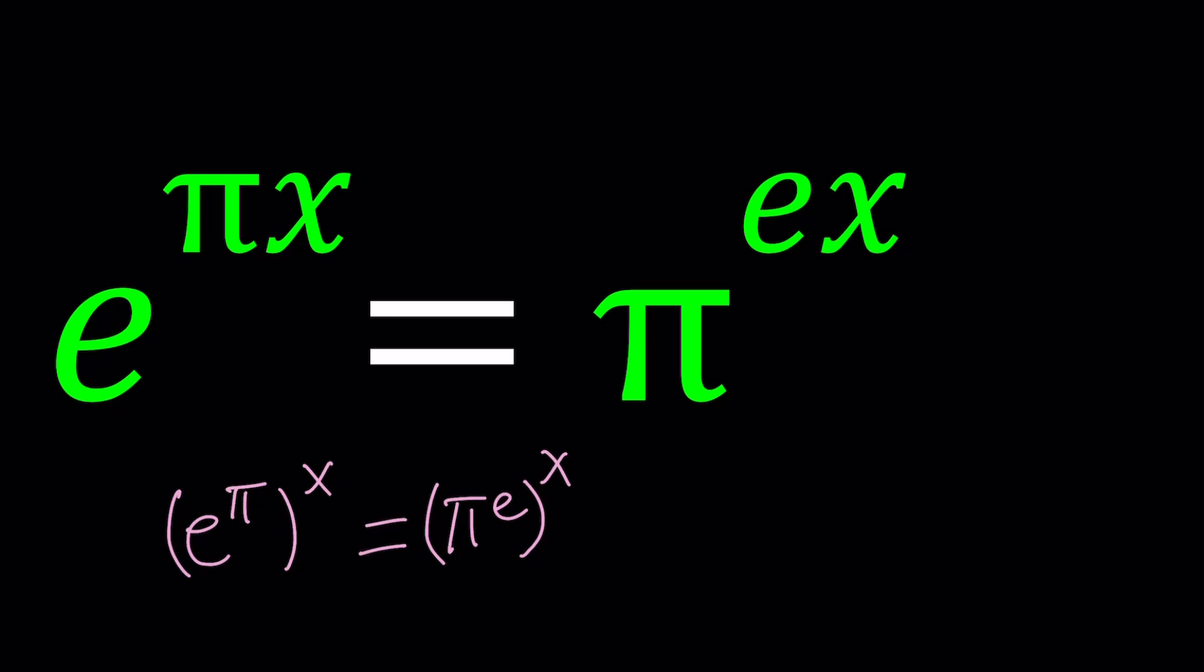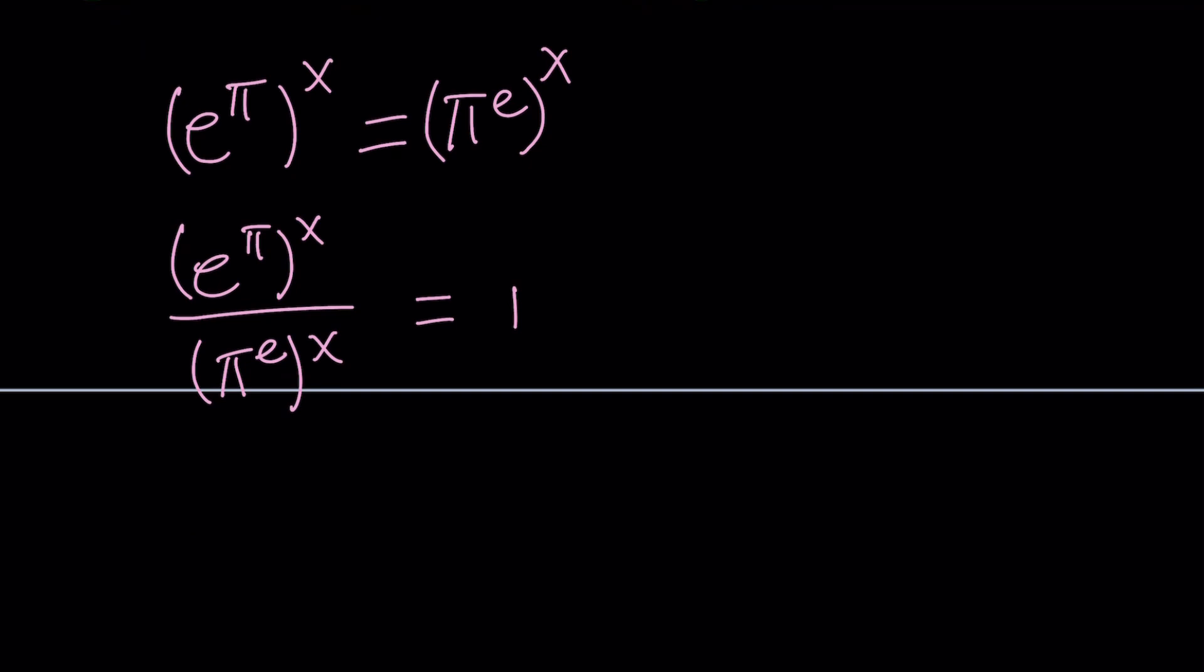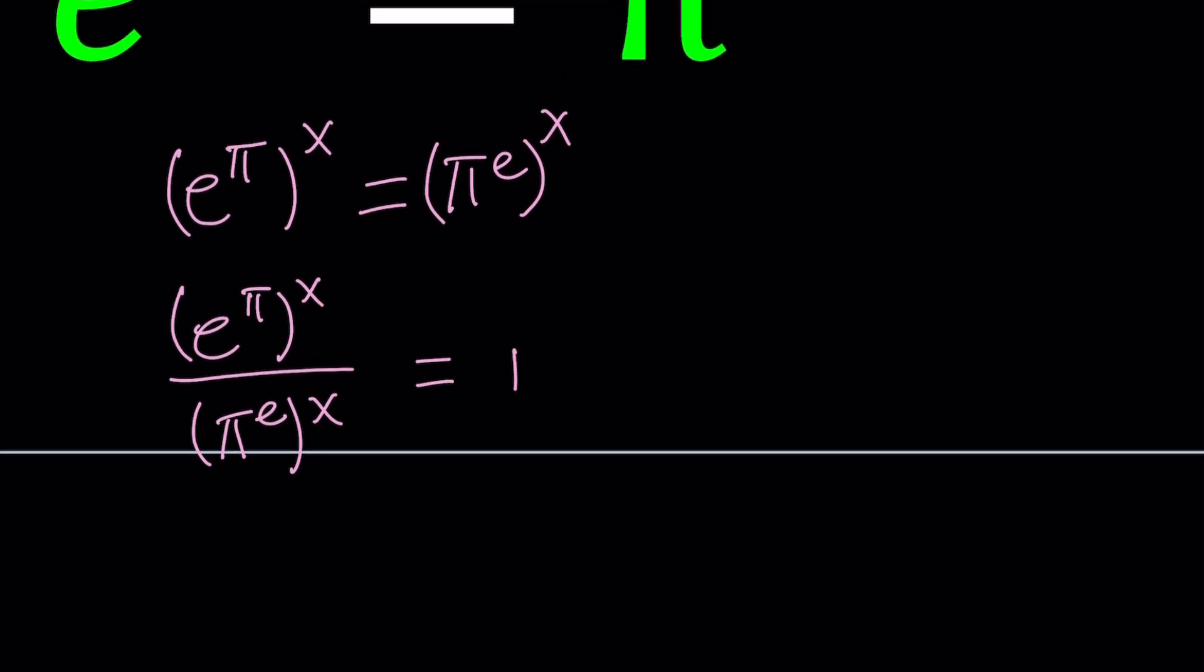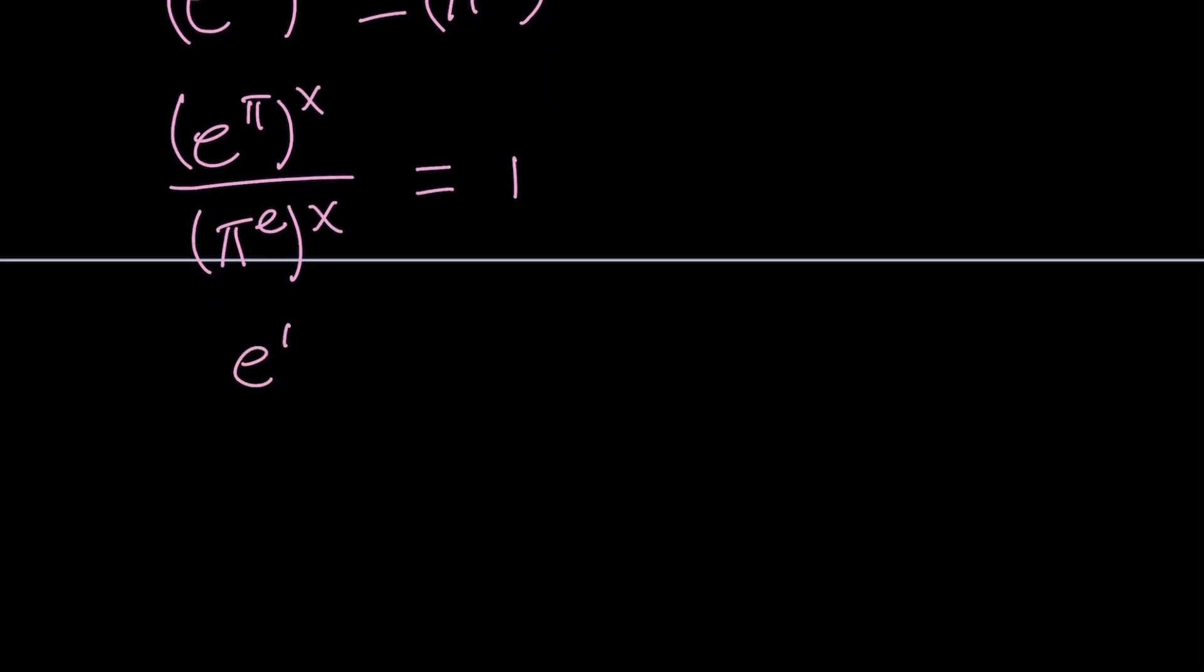So there's a couple different ways to go about it. We can divide both sides by the right hand side. So e to the power pi to the power x divided by pi to the power e to the power x equals 1. Of course, pi to the power e to the power x is not going to be 0 under no condition. And then we can write this as e to the pi over pi to the e and then to the power x equals 1.